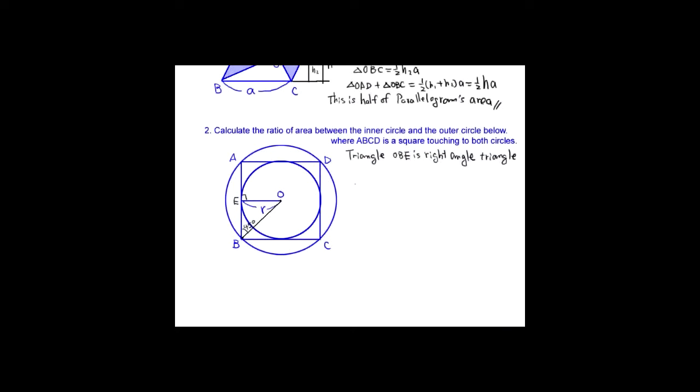If one side OE is R, the OB will be square root. So outer circle's area will be pi square root of 2R square which is pi 2 pi R square.